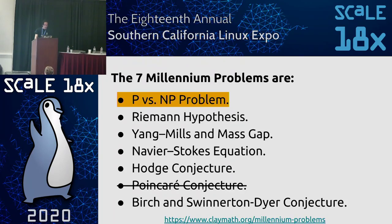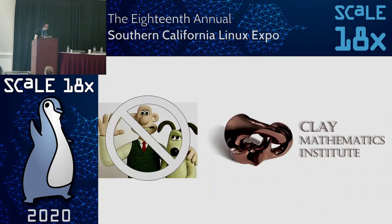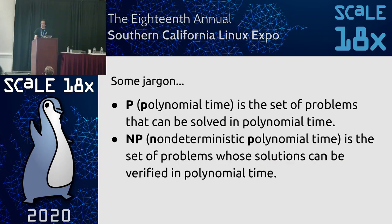One of those problems has already been solved. The Poincaré conjecture was solved a couple of years ago, and interestingly, the solver declined the award, saying it was mostly derivative work off Euler. But Euler's had enough credit for a lot of things, so I think he should have accepted it.